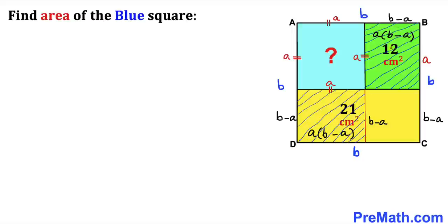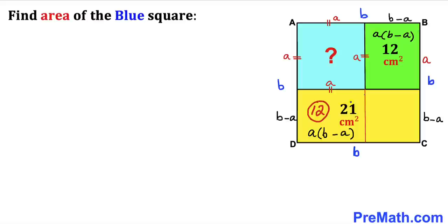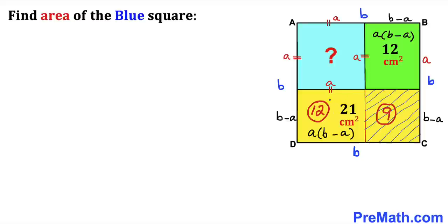So therefore the area for this green rectangle is 12 cm², and this part has got to be 12 centimeter square as well. Now we can see the area for the whole yellow rectangle is 21 centimeter square, and this part is 12, so this remaining piece is going to be 21 minus 12 equals 9 centimeter square. So we've figured out this area is 9 and this one is 12 centimeter square.